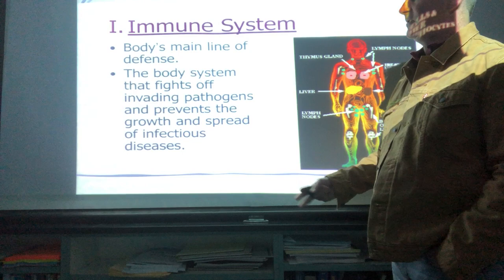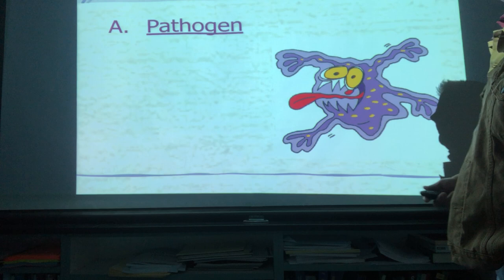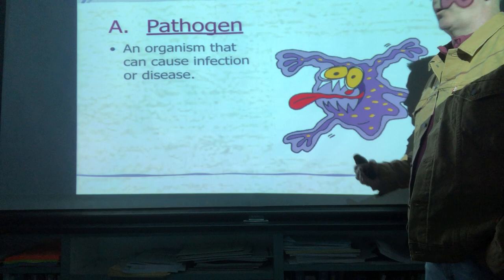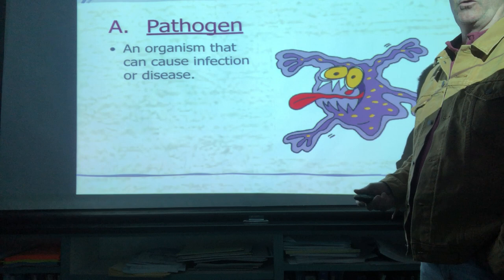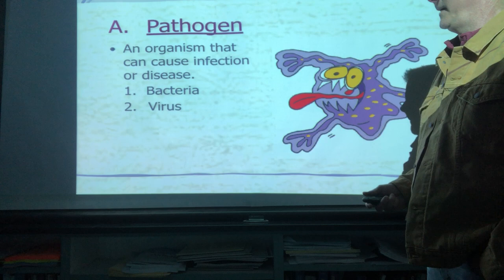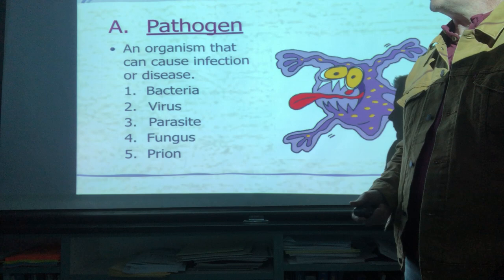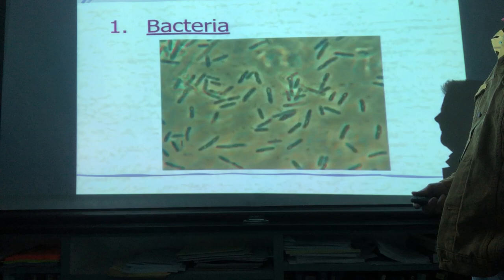If things get really bad, infections can work their way into diseases. A pathogen by definition is some kind of microorganism that can cause infection or even worse, disease. There are five known pathogens: first is bacteria, second is a virus like COVID-19, third is a parasite, fourth is a fungus, and fifth is an interesting one called a prion. Let's take a look at some pictures and I'll have a few comments about each.